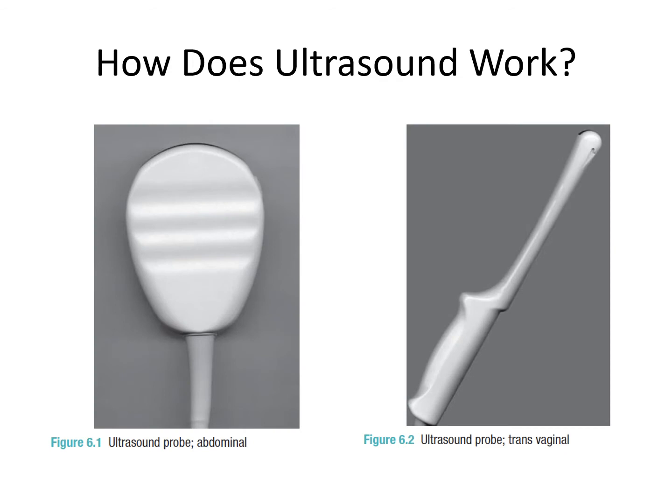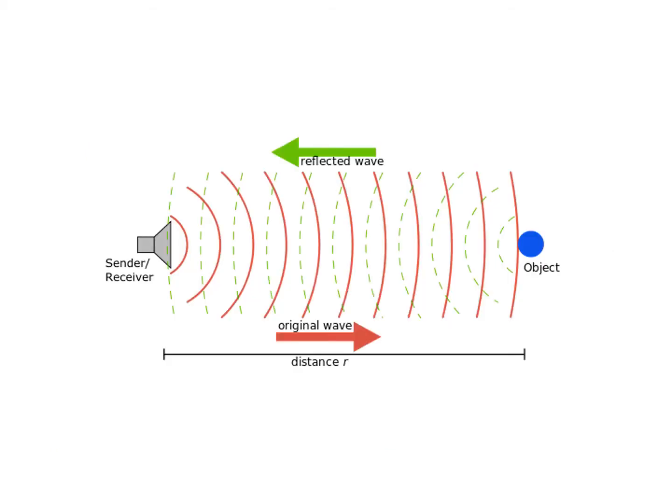This shows us two examples of ultrasound transducers or probes. The wider array is the type used for abdominal applications, applied to the mother's abdomen with ultrasound gel, and the other type is used for vaginal applications. The transducer acts as both sender and receiver of sound waves. The sound waves travel through the tissue and bounce off objects within their path, sending echoes back to the probe which are represented as images on the ultrasound screen.